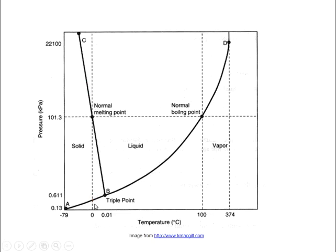Point B on the phase diagram is called the triple point, where three lines intersect. At that very specific temperature and pressure — 0.01°C and 0.611 kilopascals for water — all three phases (solid, liquid, and vapor) exist in equilibrium. Sealed in a container, all three phases persist at that point. The triple point is actually used to define the temperature scale: the triple point of water is 273.16 Kelvin, and it is reproducible anywhere.